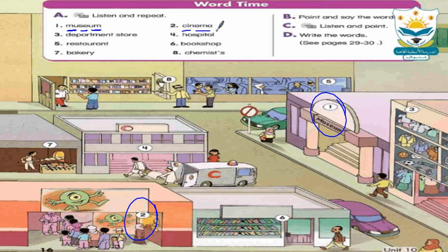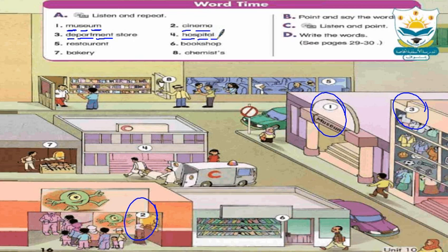Number three: department store — what's the meaning of department store? It means متجر كبير متنوع, a large variety store. Spelling: D-E-P-A-R-T-M-E-N-T. And 'store' means المتجر — متجر متعدد الأقسام. Number four: hospital — hospital means المستشفى. Spelling: H-O-S-P-I-T-A-L. This is a hospital.